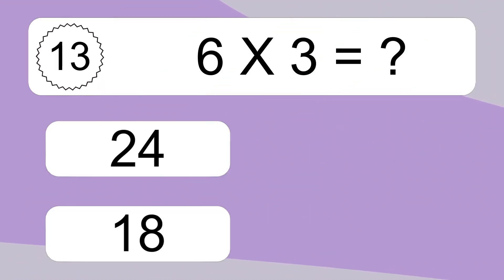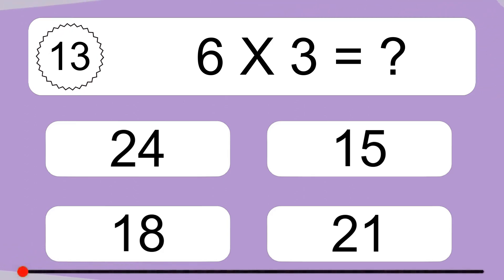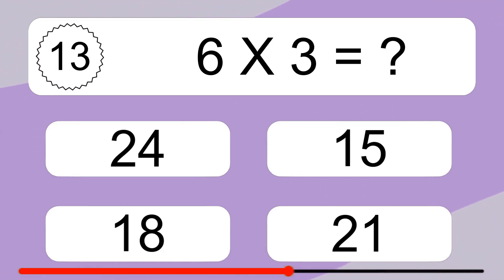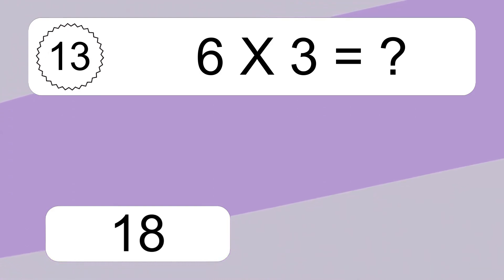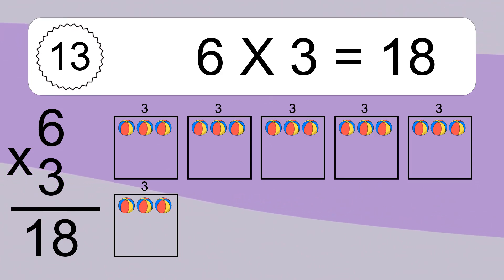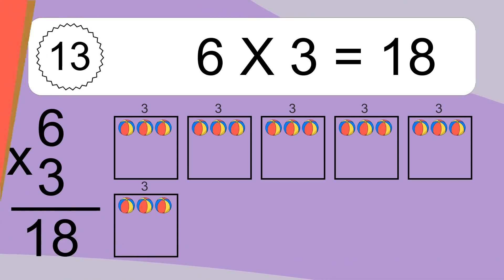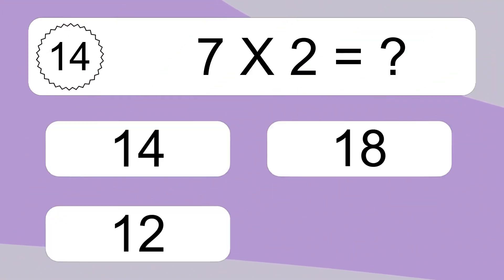6 times 3 equals what? 6 times 3 equals 18. We have 6 boxes, and each box has 3 colorful balls inside. If you count all the balls in all the boxes together, you will have 6 times 3 balls. This equals 18 balls.